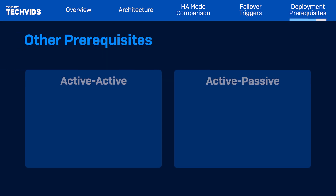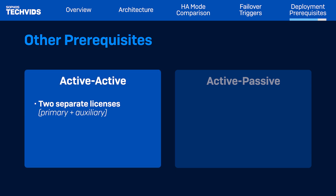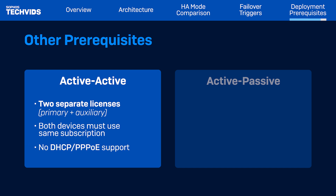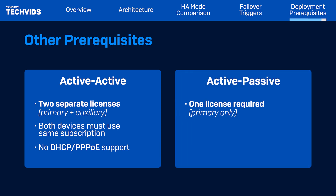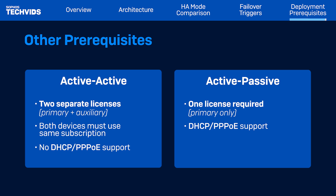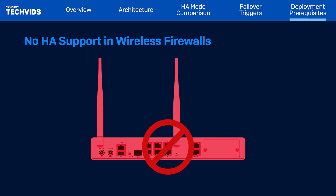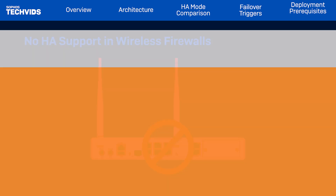Depending on which HA mode you deploy, there are a few additional prerequisites. For active-active, two separate licenses are required — one for the primary device and one for the auxiliary device. Furthermore, identical software subscriptions must be enabled on both devices. Note that this mode does not support DHCP or PPPoE. On the other hand, active-passive only requires one license, but it must be applied to the primary firewall — otherwise, configuring high availability will not work. Active-passive is also the only mode that supports interfaces dynamically configured using DHCP or PPPoE. Finally, HA is not supported on wireless firewall models.